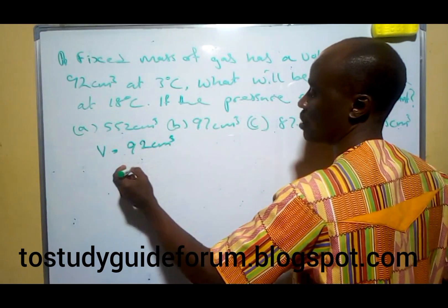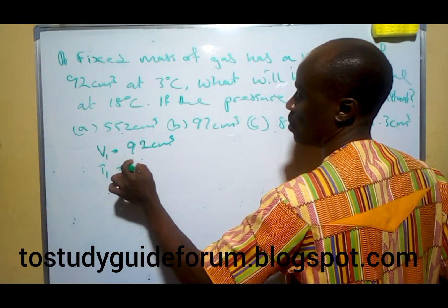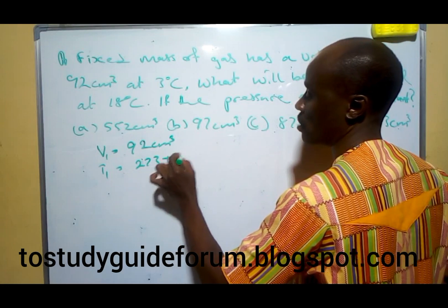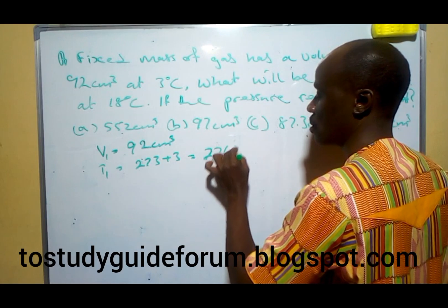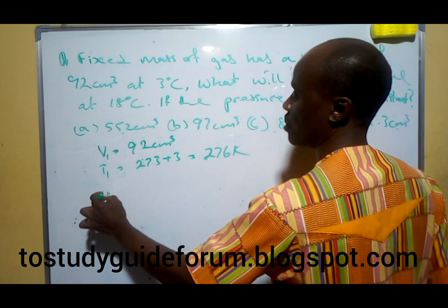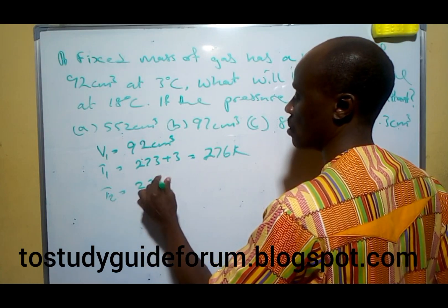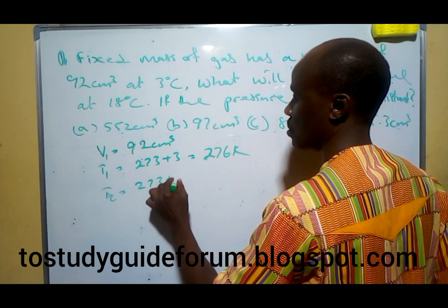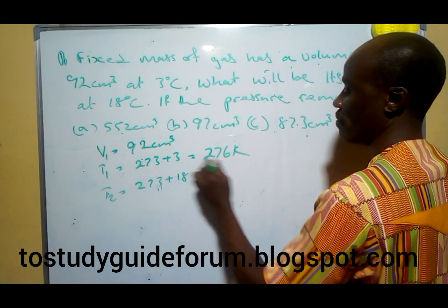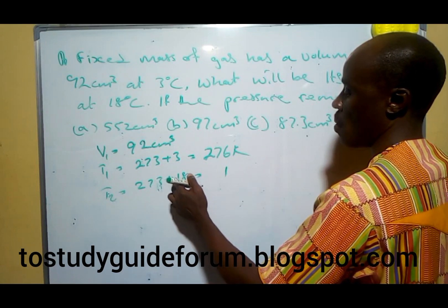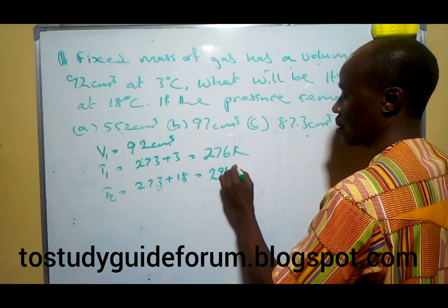The volume V1 is equal to 92 cm³. T1 is 3 plus 273, that will give us 276 Kelvin. And the temperature T2 will then be 18 plus 273, that will give us 291 Kelvin.